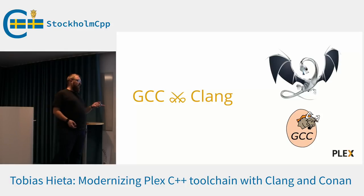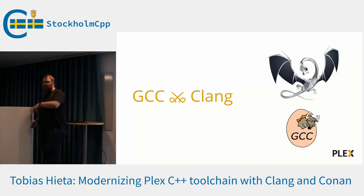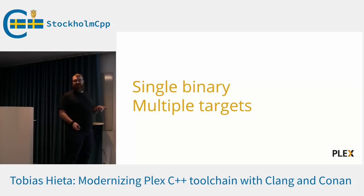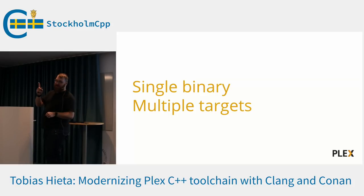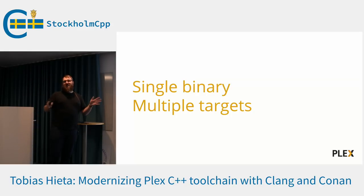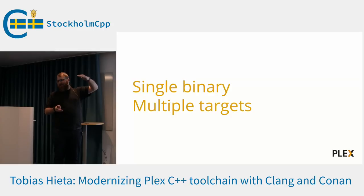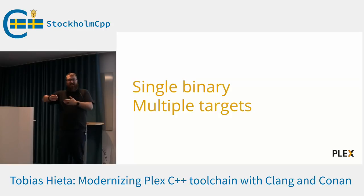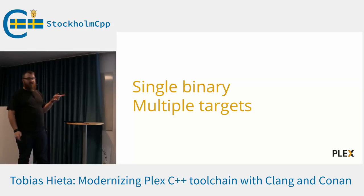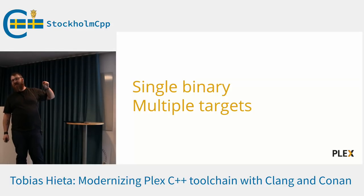One discussion in the beginning was: shouldn't we just go with GCC? The reason we went with Clang is that we can have one single binary — one Clang compiler for all our Linux targets, one Clang compiler for all our macOS-based targets, instead of having one GCC compiler per target. This is just how Clang is structured, with a backend that is separated from the front-end. GCC doesn't have that capability, or at least can't build it that way.